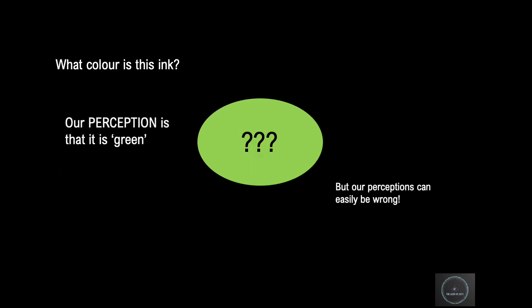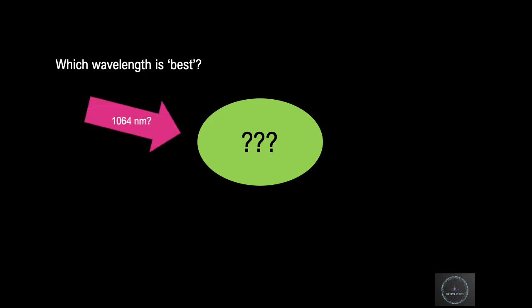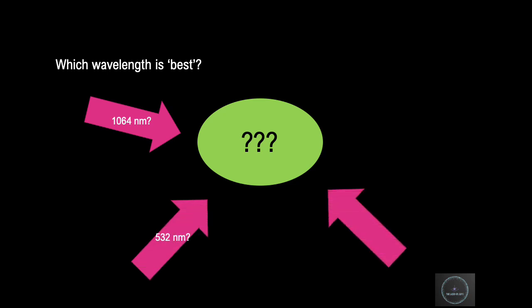So while we may perceive this ink colour to be green, our perceptions may well be wrong. So when it comes to treating these with lasers, what's the best wavelength? Is it 1064 or 532 from the YAG laser? Is it 755 from the Alexandrite? Or would it be 694 from the Ruby laser?